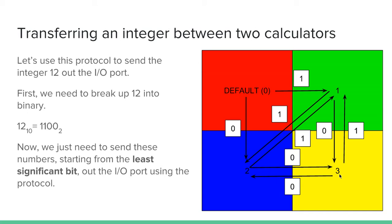Let's use this protocol to send the integer 12 out the I/O port. First, we need to break up 12 into binary. So 12 in decimal is 1, 1, 0, 0 in binary. Now we just need to send these numbers starting from the least significant bit out the I/O port using the protocol.